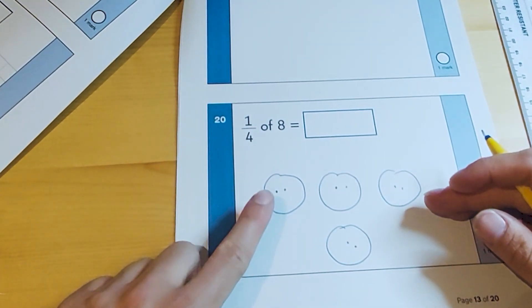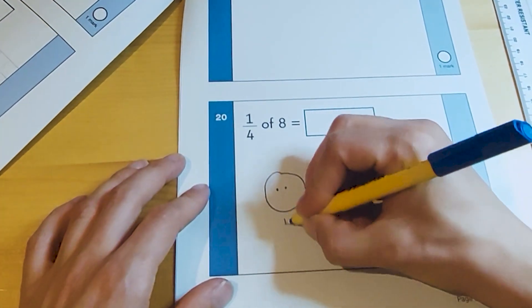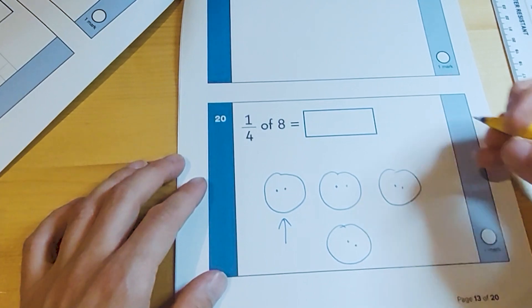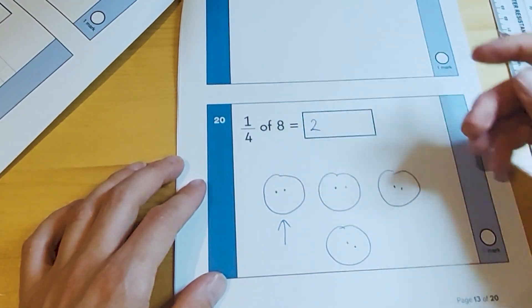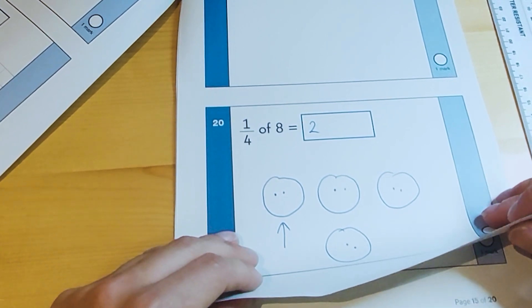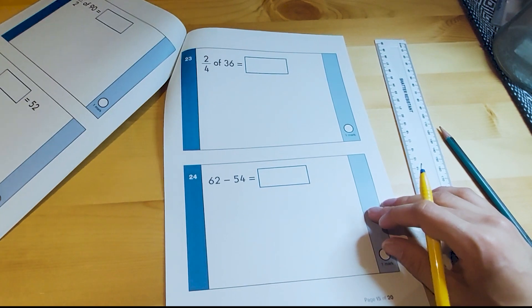I'm just going to be counting one of those groups because the numerator tells me that I just need one. How many is in one of those groups, you would say to the child, and they can see there that there are two. So that is the method that we would teach them in Year 2, and that's how to solve number 20, the first fraction question on the arithmetic paper.